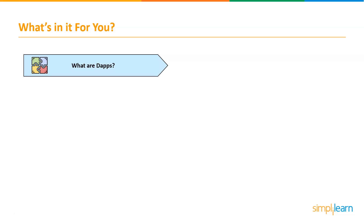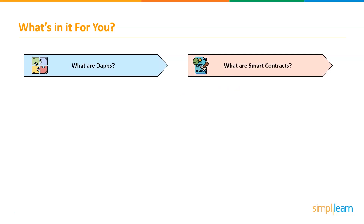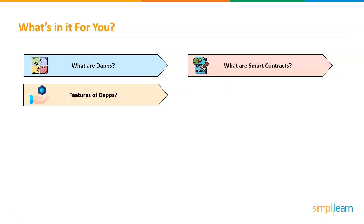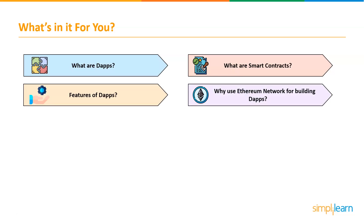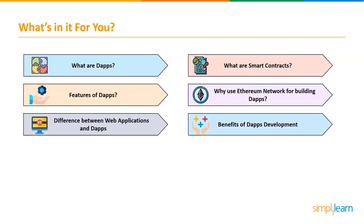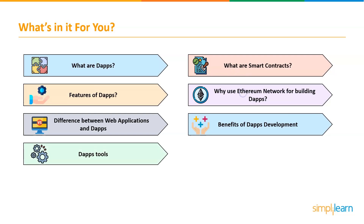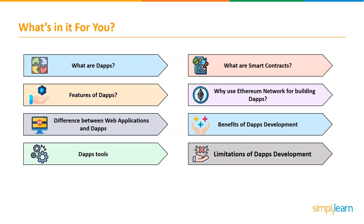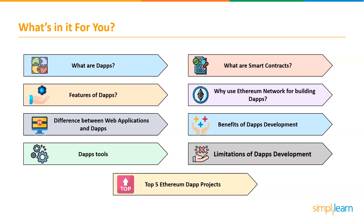First, we will understand what are DApps or decentralized applications. Then, we will explore what are smart contracts. Then, we will look into the features of DApps. Then, we will figure out why use Ethereum network for building DApps. Then, we will explore the difference between web applications and decentralized applications. After which, we will understand the benefits of DApps development. Then, we will have a look at the DApp tools. Then, we will explore limitations of DApps development. And at last, we will explore the top 5 Ethereum DApps projects.